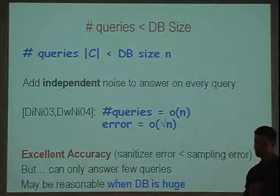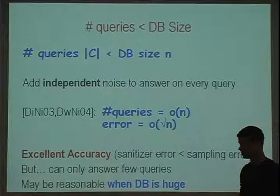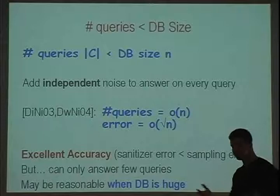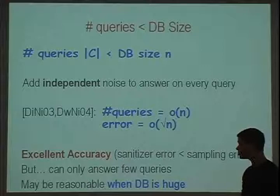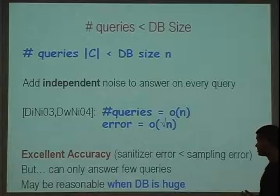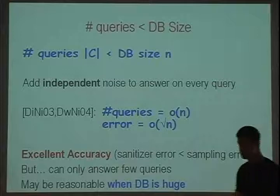When we look at these results, first the accuracy is great — we're below the square root of n magic number, where the sanitizer error is less than the sampling error we expect anyway in statistical data analysis. Of course, what's bad is the richness of the analysis: we can only answer a few queries. This may be OK for a huge database, like Google's search logs with hundreds of millions of users. But if you want to run a medical study with a few hundred or thousand participants, you can only ask a few questions — that's a serious problem.